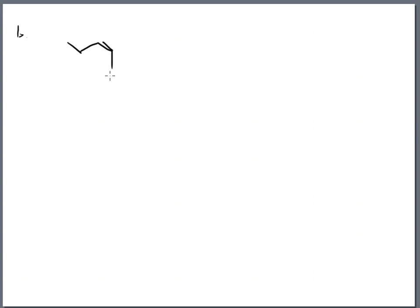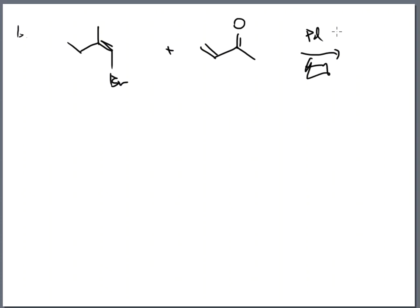Let's take a look at Part B. They drew it a different way because this was getting across the idea of stereochemistry. Here's what they gave us with our halogen, and we are going to be adding this piece onto it, with palladium and so on.